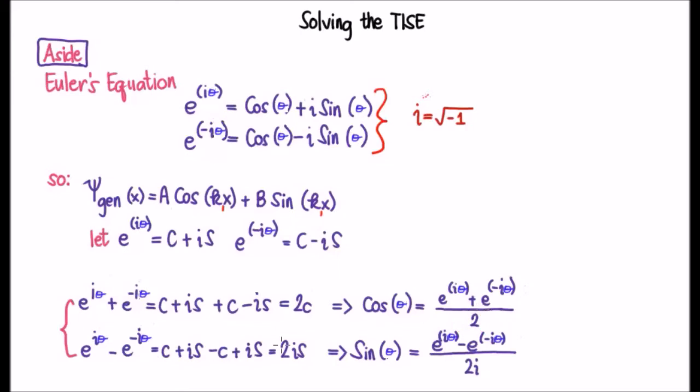Next I'm going to subtract e to the minus i theta from e to the i theta. That's going to be cosine plus i times sine theta minus cosine theta plus i times the sine of theta.